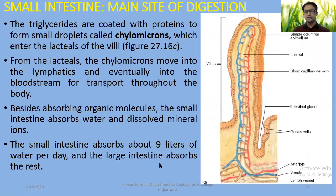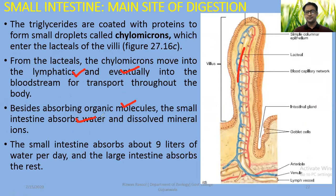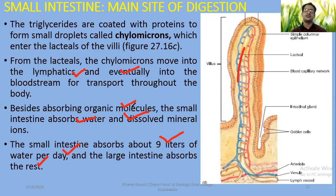From the lacteals, chylomicrons move into the lymphatic system and eventually into the bloodstream for transport throughout the body. Besides absorbing organic molecules, the small intestine also absorbs water and dissolved mineral ions. The small intestine absorbs about 9 liters of water per day, while the large intestine absorbs the remainder. The large intestine also absorbs water and some salts.